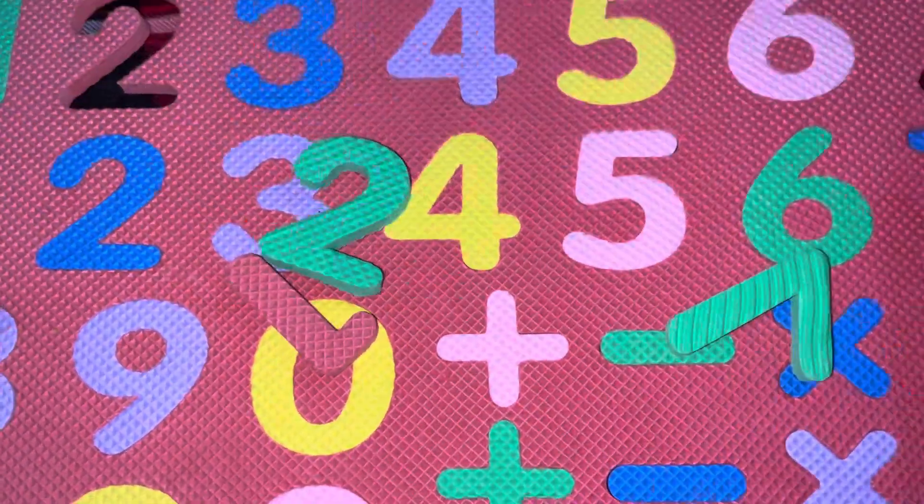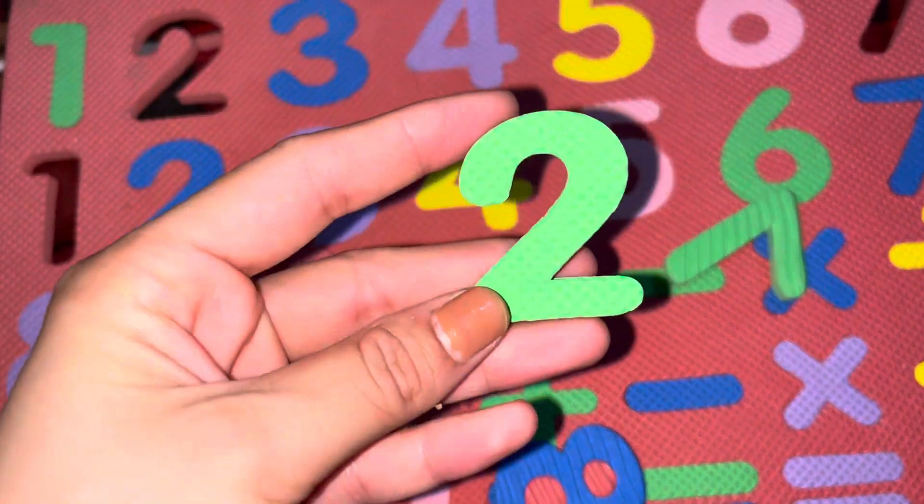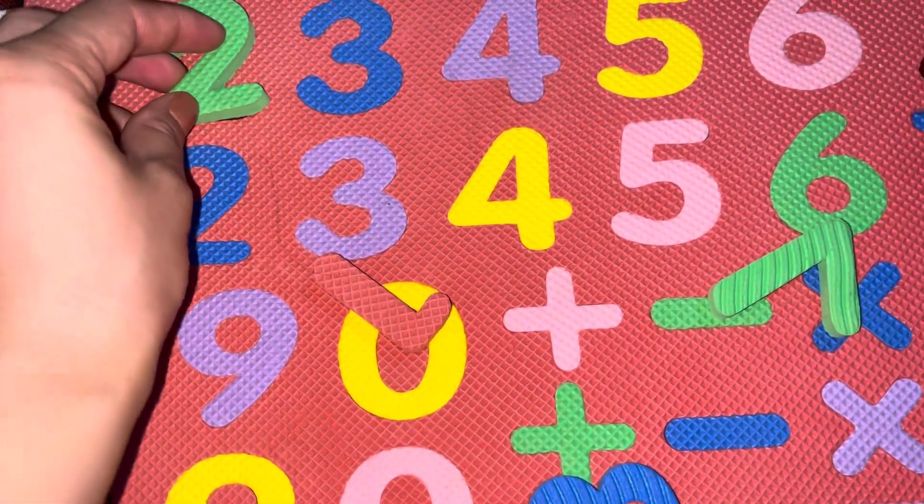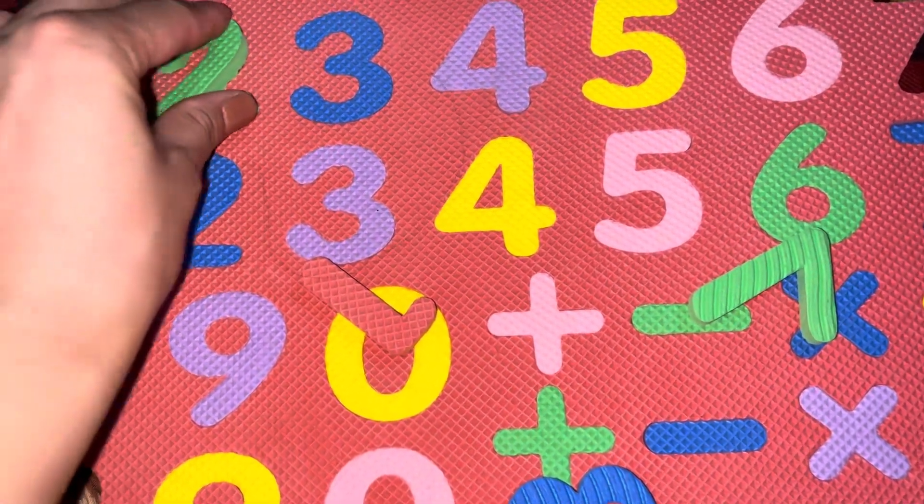So the first one is number. Identify the number. Which number is it? It's 2. So we'll put it over here. What's the spelling of 2? T-W-O, 2.